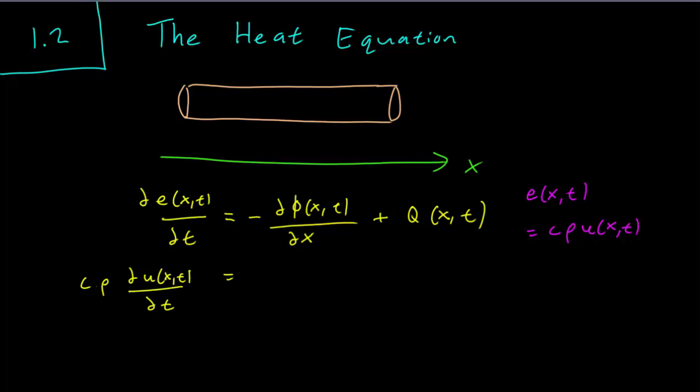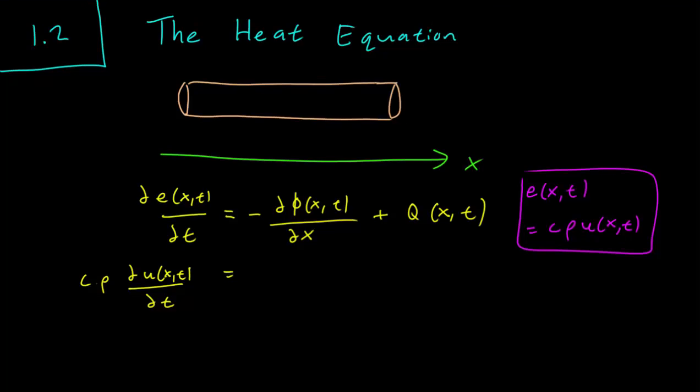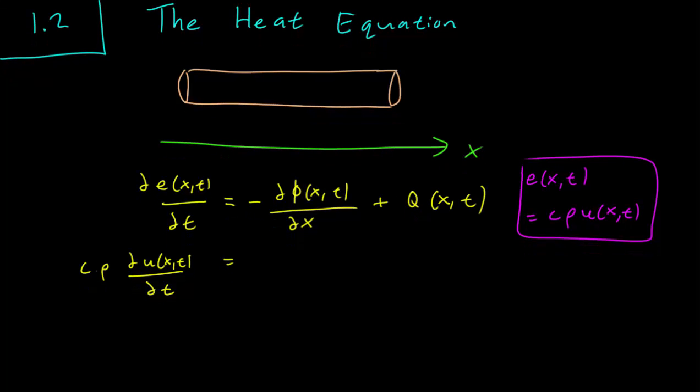Now we have to think about the right hand side of the equation. For this one we can introduce Fourier's law. If you remember Fourier's law told us that phi, the heat flow, is equal to minus k_0 times the x derivative of the temperature.